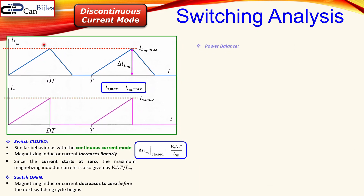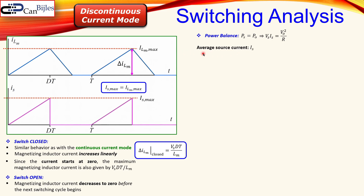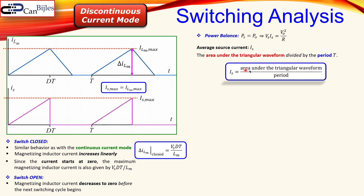Now we need the relationship between the output voltage and the input voltage. Using a power balance, in the ideal case the source power equals the output load power: Vs times average source current equals Vo squared over R. The average source current is determined from the waveform plot — it is the area under the triangular waveform divided by the switching period T.